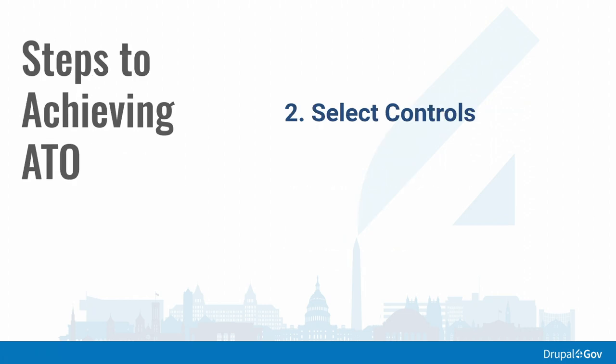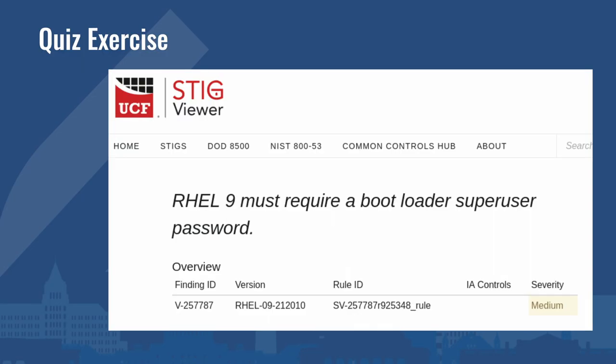Let's talk about step number two: selecting the controls. This is the spot where you can do a lot of pre-work that can save yourself a lot in the end. You'll probably be handed a huge selection of controls depending on what you are — whether you're doing a DISA STIG or using the CIS benchmarks or anything. This STIG has like 700 or 800 controls just for an operating system itself.